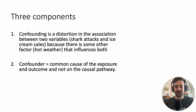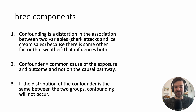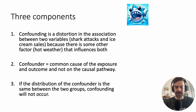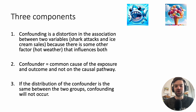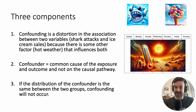There are three important components to walk away with. First, confounding is a distortion in the association between two variables — shark attacks and ice cream sales — because some other factor, hot weather, influences both. Second, a confounder is typically a common cause of the exposure and outcome, and is not on the causal pathway. Third, if the distribution of the confounder is the same between the two groups, confounding will not occur. In the shark attack example, if there's a heat wave and every single day is the exact same temperature, confounding won't occur from temperature.